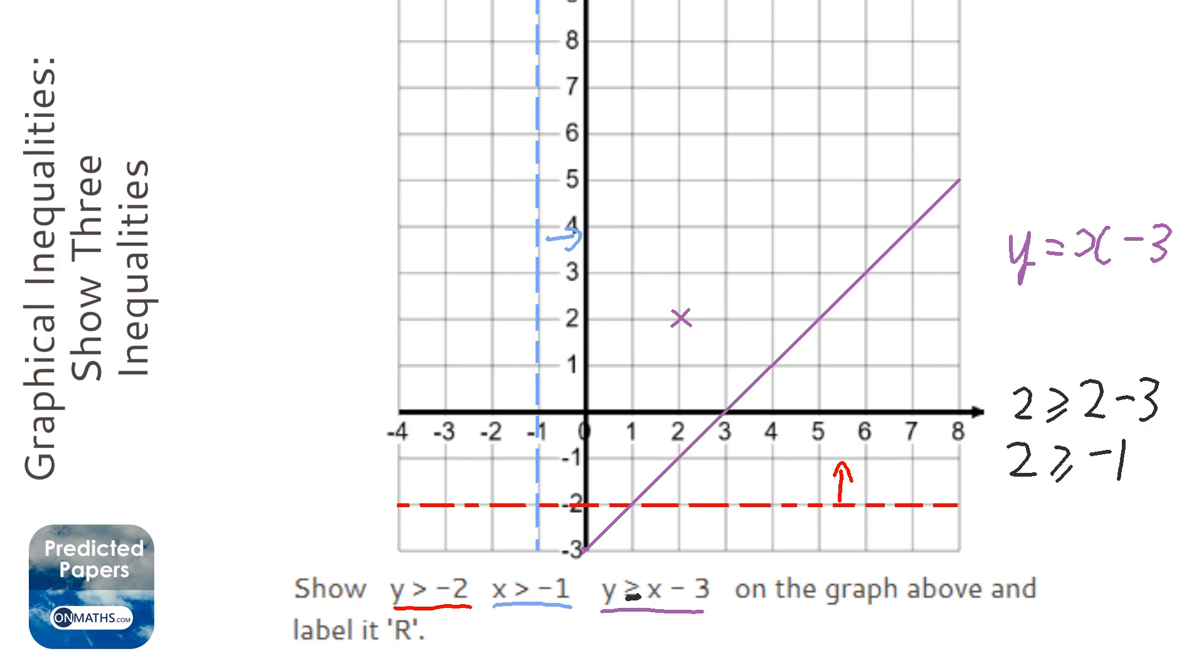2 take away 3 is minus 1, and that is actually true. So that little region or that little coordinate here is in the region we want for that last line. So it's going to be like there.